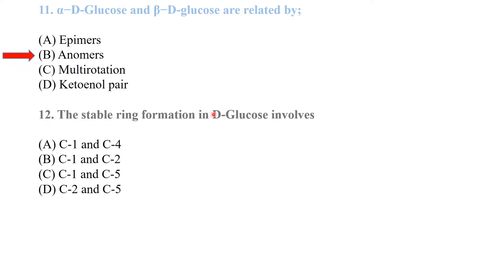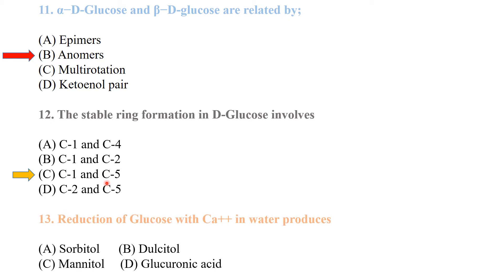The stable ring formation in D-glucose involves carbon 1 and carbon 5. Carbon 6 or carbon 3 remains outside the ring.